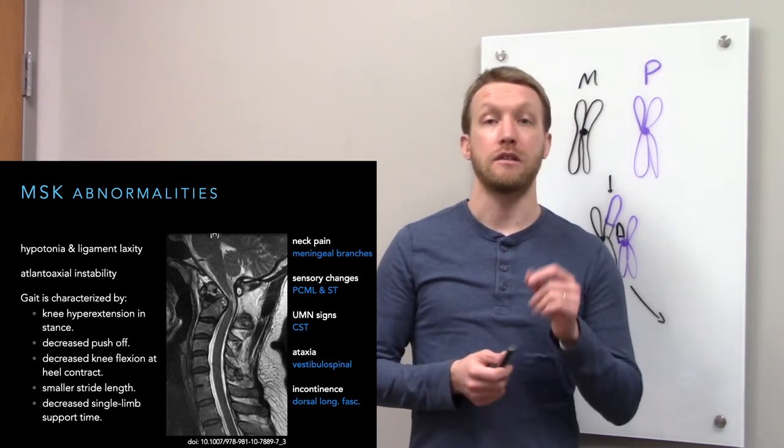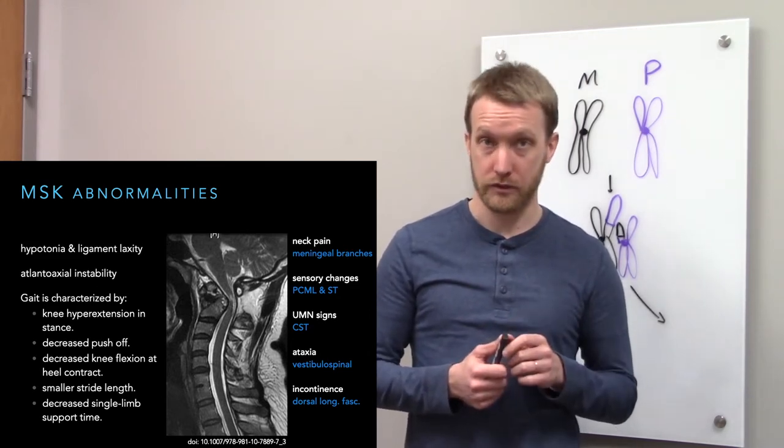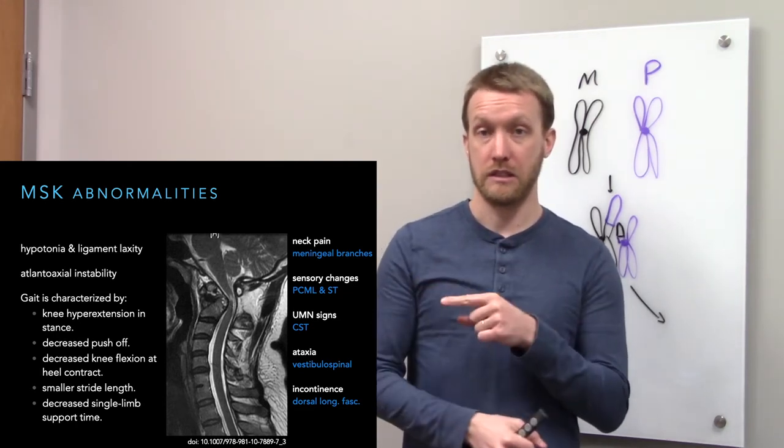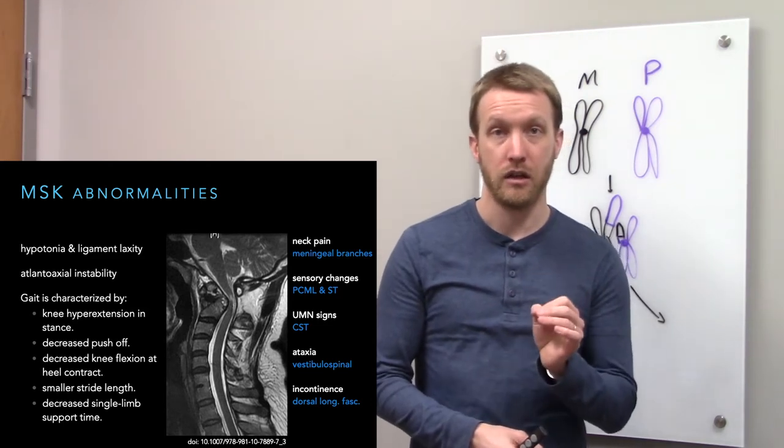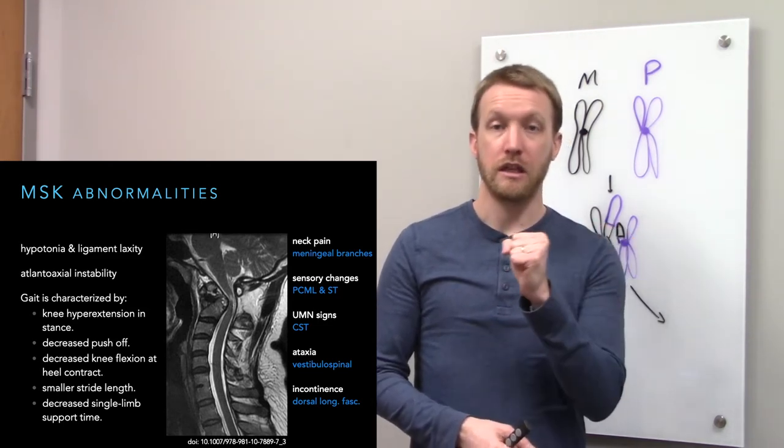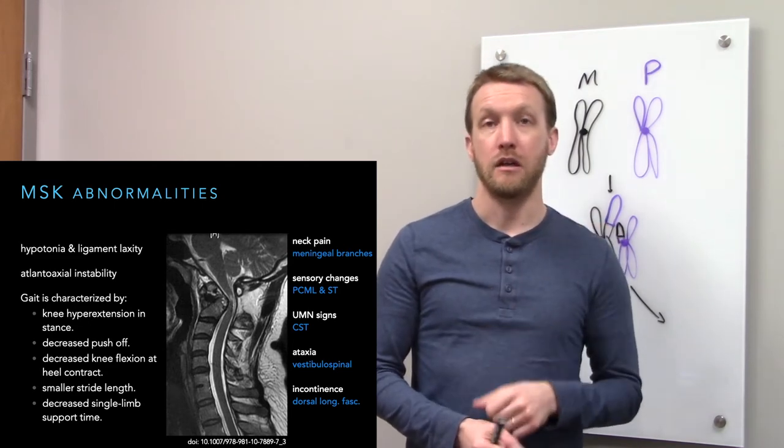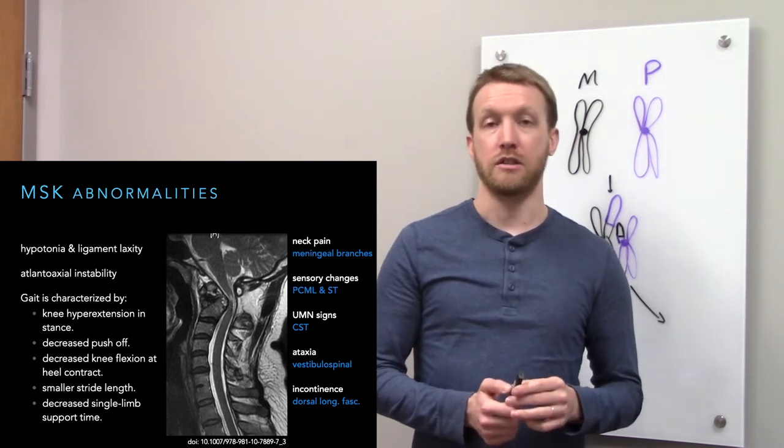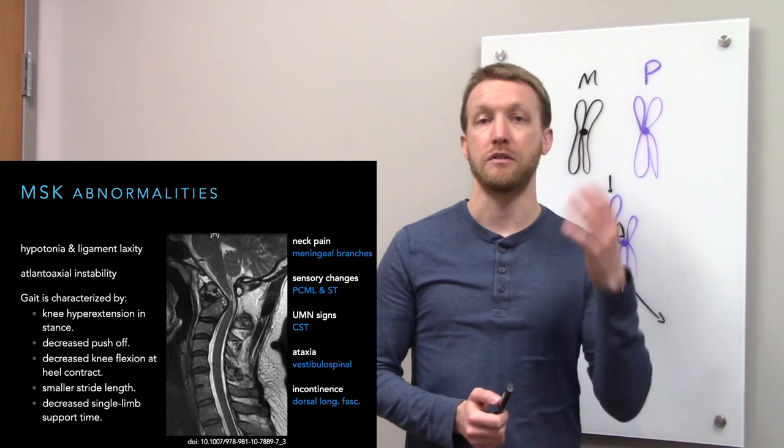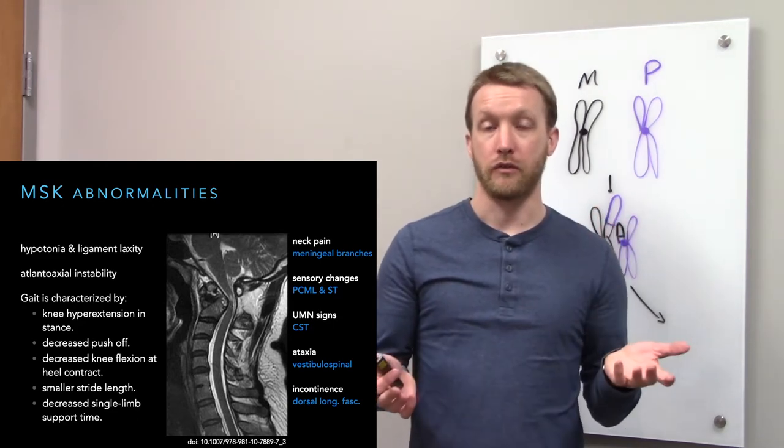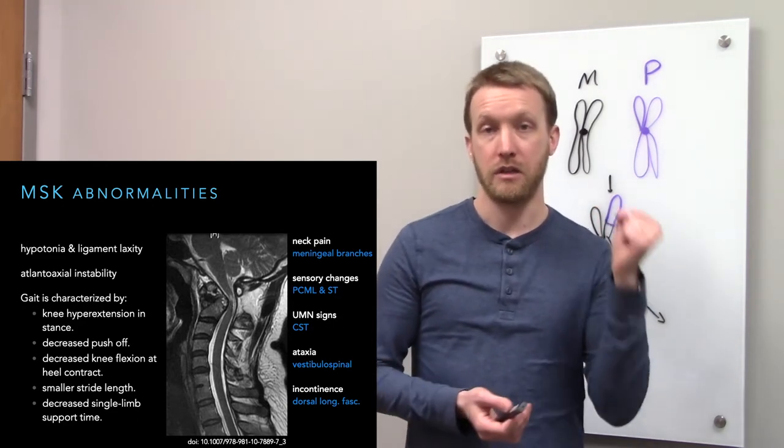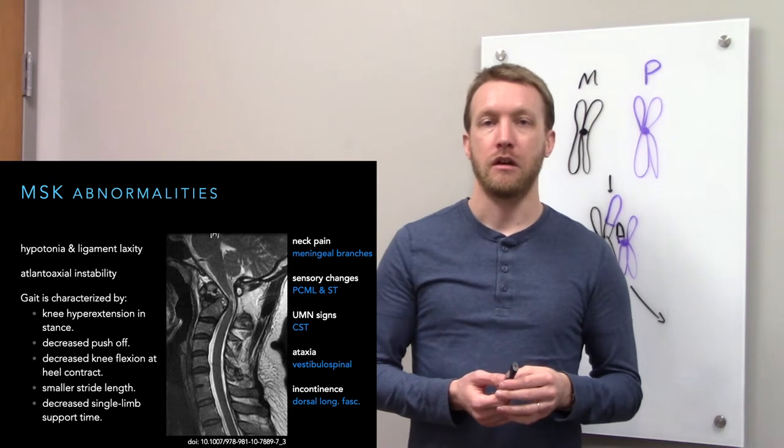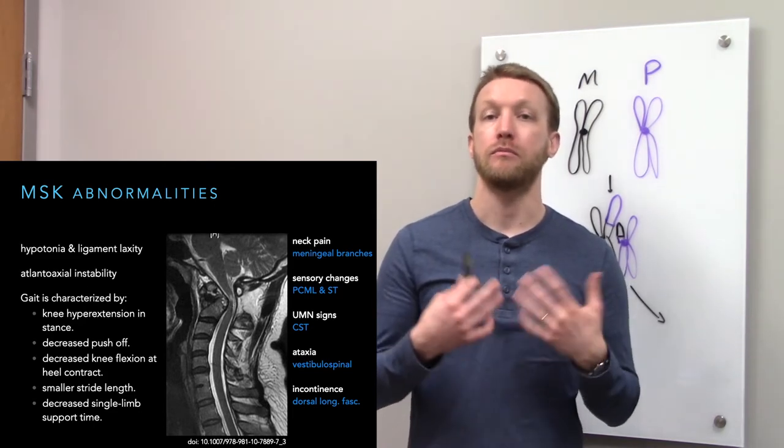More relevant for this class is the atlantoaxial instability, so instability at the C1, C2 spinal levels. That can lead to displacement of the vertebrae. As we can see in this image, that's not a good thing. The posterior displacement of the vertebral bodies will push on the spinal cord. Pushing on the spinal cord interferes with communication between the brain and spinal cord. This will create some neck pain because we're pushing on the meninges.